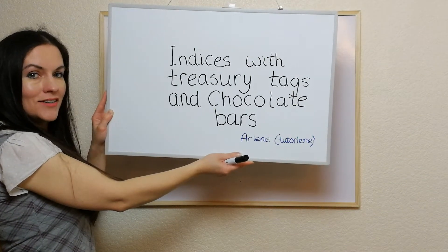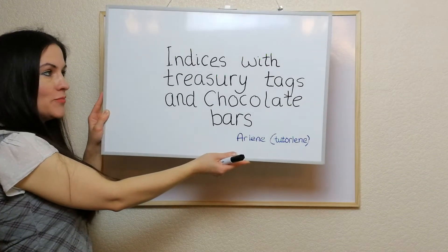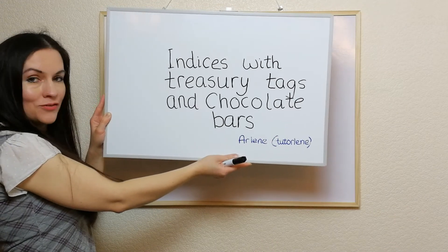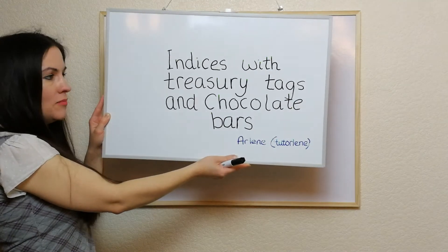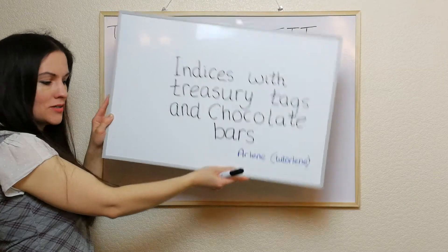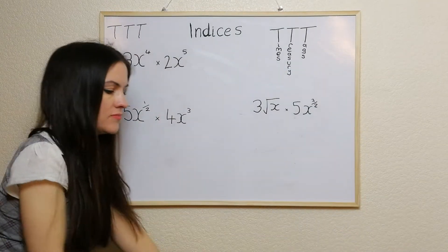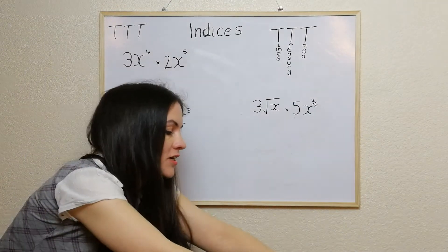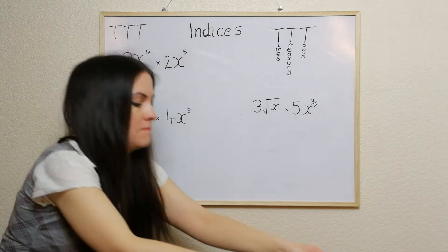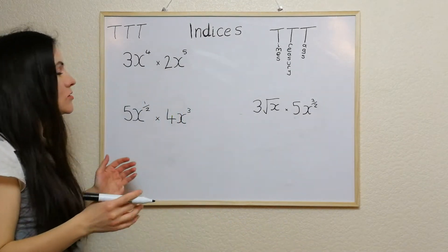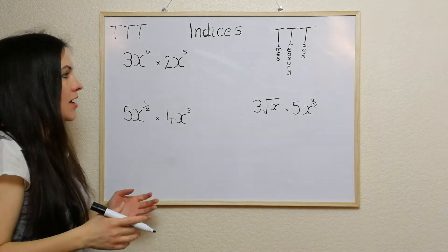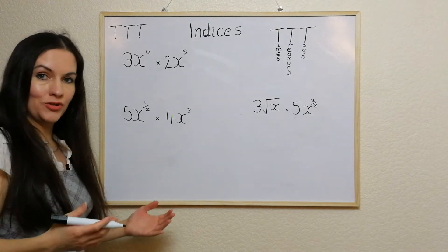Hello, my name is Arlene and this time I'm going to show you how to do indices, which is part of the National 5 curriculum, using treasury tags and chocolate bars. For those of you who don't know what a treasury tag is, this is what they look like. I'll start off with some easier examples and then we'll move on to the more difficult.